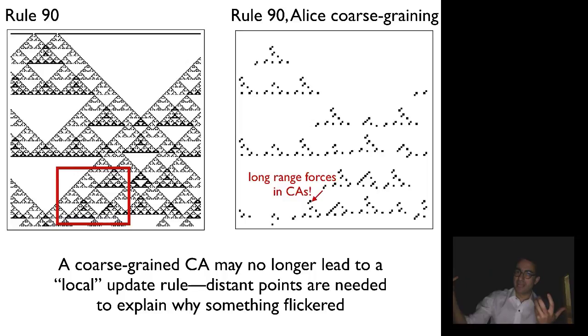You need arbitrarily distant points to explain why something flickered on. It's sort of like some kind of action at a distance. If I coarse-grain in this way, if I do this projection down coarse-graining, it appears that in fact something has sprung from nothing. And no matter how I try to sort of hard-code a long-distance relationship, and by coarse-graining in time, I can always make a longer-distance relationship. So there are some projections that make rule 90 undescribable using this local rule. And I say local here, meaning the value of a pixel at this point depends only upon the value at a time just previous.